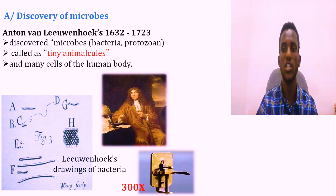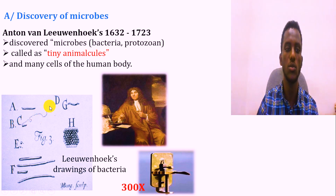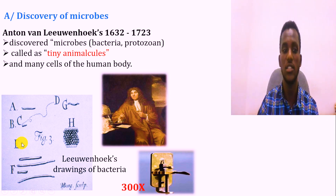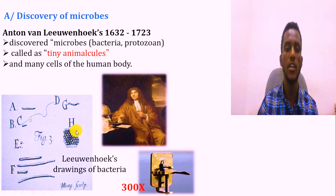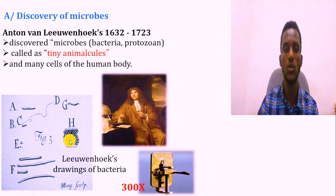We can see the microorganisms under the microscope in various forms. Bacteria were observed in different shapes: rod-shaped bacteria, initial string-shaped or filamentous structures, micro-shaped structures, and spherical-shaped bacteria.